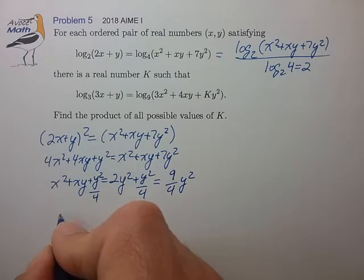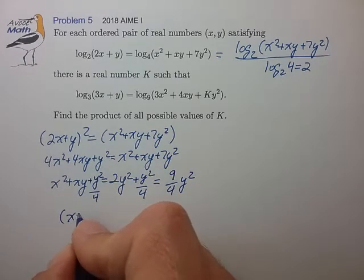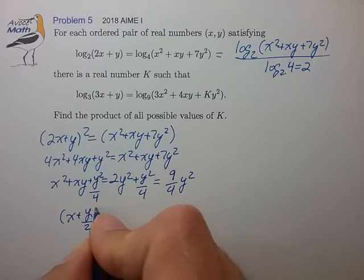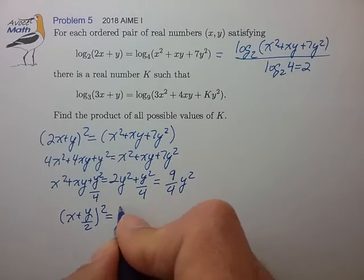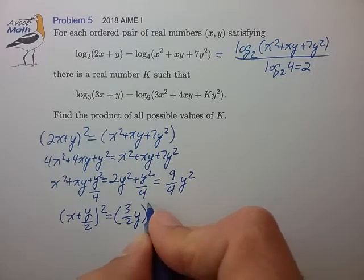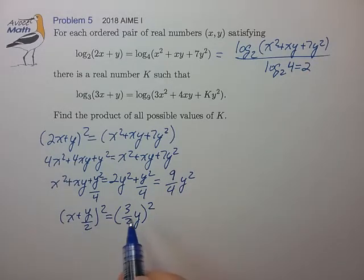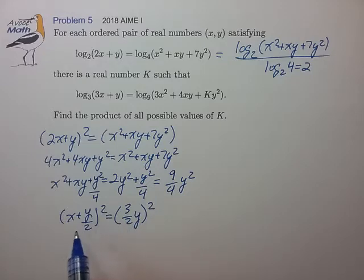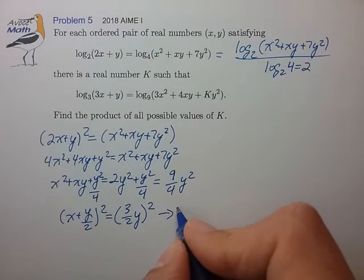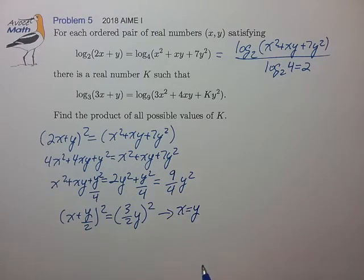This sums out to 9 over 4y squared. We can then write this as a square. We have an equation of two squares and there's two ways that we can satisfy this. Either x plus y over 2 has to equal 3 halves y, in which case we know that x is equal to y.